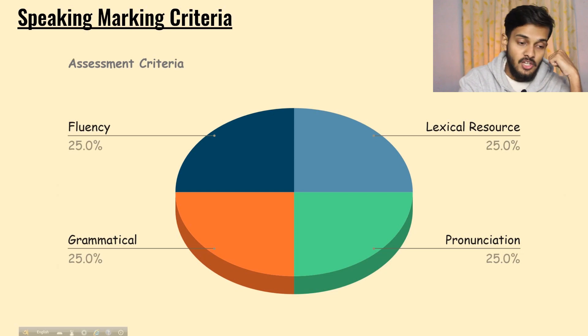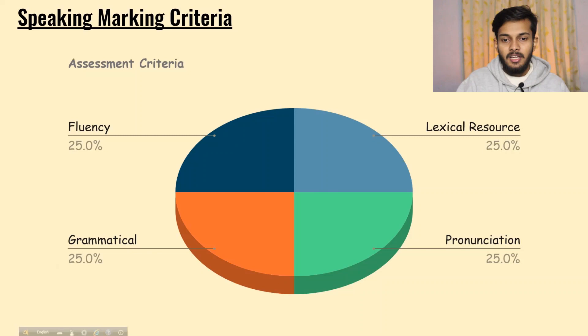Fluency means not stopping while you're speaking — how fluently you can deliver your speech and keep continuing your communication with the examiner in English. The examiner will give you a band score out of nine for fluency across your overall speaking test.